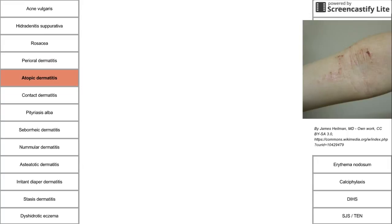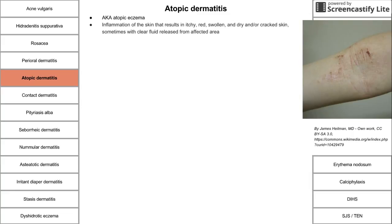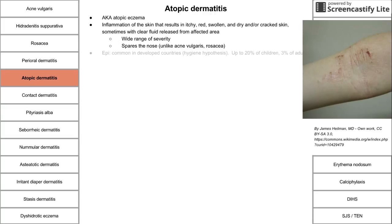Next is atopic dermatitis, also called eczema. It's an inflammation of the skin resulting in itchy, red, swollen, and dry or cracked skin, sometimes weeping clear fluid. It usually spares the nose — that differentiates it from acne vulgaris and rosacea. If a child comes in with redness on the nose, it's not atopic dermatitis. Atopic dermatitis is common in developed countries, lending credence to the hygiene hypothesis.